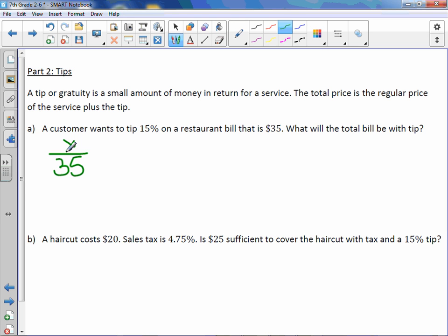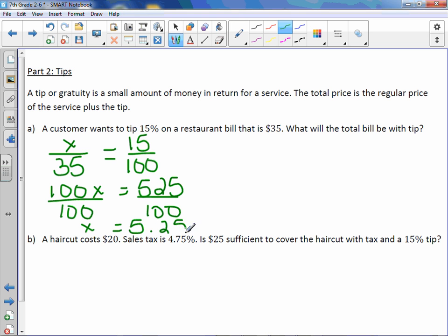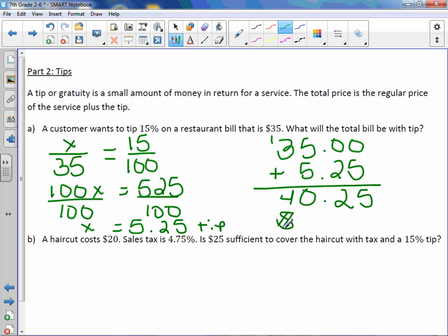And our percent is 15, and we put it over 100. Cross multiply. 100x equals 35 times 15 is 525. Divide by 100. x equals $5.25. And this is a tip. Take your amount of your bill, add the tip. And you get a total amount of $40.25.